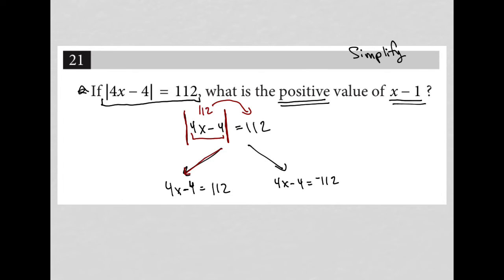However, if the quantity 4x minus 4 is equal to negative 112, even in that case, the absolute value of it will still turn it to a positive 112. And this is why we have this case, this scenario, here.